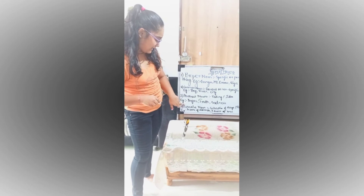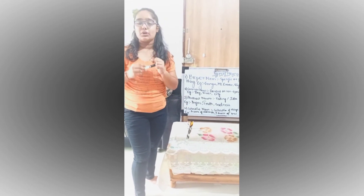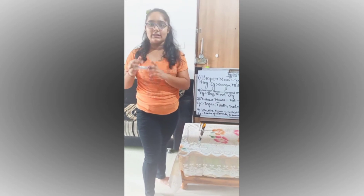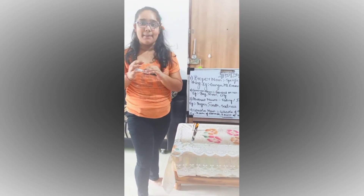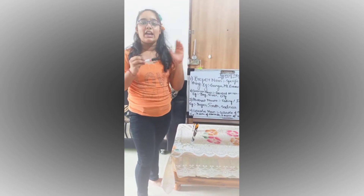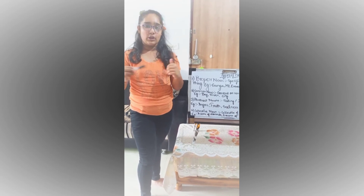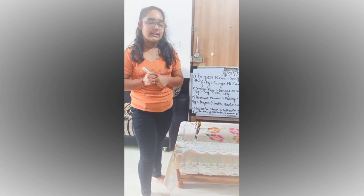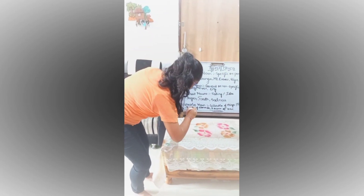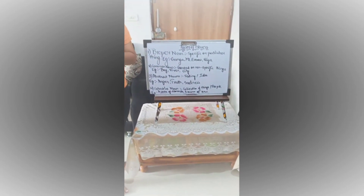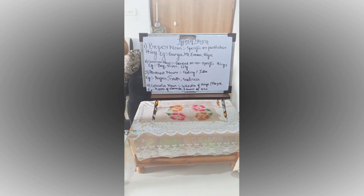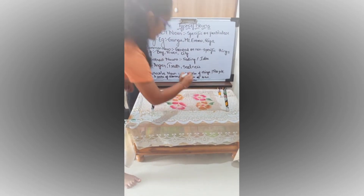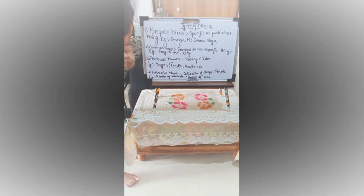Next, lastly, we have collective nouns. Collective nouns refer to a collection of things or people. Example: a cache of diamonds — a lot of diamonds collected together is known as a cache of diamonds, so cache here is a collective noun. Next, we have a swarm of bees — a large number of bees together is known as a swarm of bees, so swarm here is the collective noun.